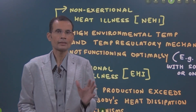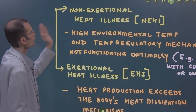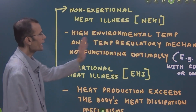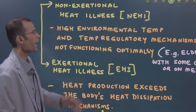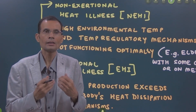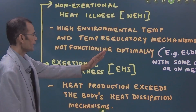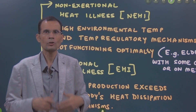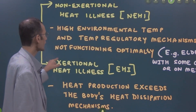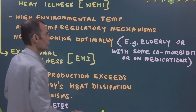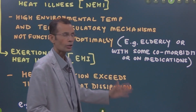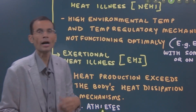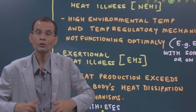There are two categories of heat illness. The first is non-exertional heat illness (NEHI), where there is high environmental temperature and thermoregulatory mechanisms are not functioning optimally. In this scenario, the environmental temperature is very high and the body normally tackles it by causing heat loss. But in some individuals — such as elderly persons, those with comorbidities, or those on certain medications known to disturb temperature regulating mechanisms — the body is unable to cope with that high environmental temperature.